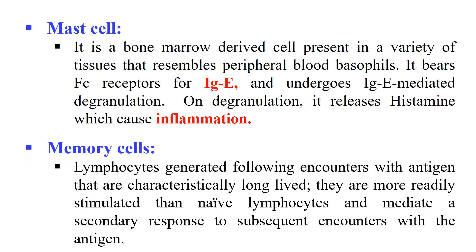Next, Memory Cell. As mentioned, the immune system remembers pathogens and acts in the future through memory cells. Whenever there is a pathogen attack, certain cells — either B lymphocytes or T lymphocytes — are produced and stored in memory. These cells, which are stored in memory and used in the future, are known as memory cells. They are generally long-lived and more easily activated than naïve cells.